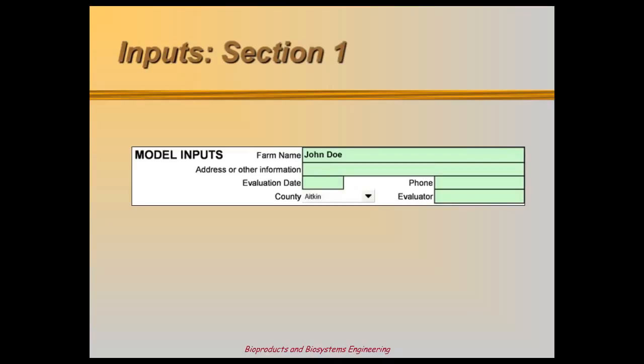First, the basics: farm name, location, and site contact information. The site evaluator and the date of the site visit comes next. A drop-down menu selects the feedlot's location by county. This is critical because climate varies across the state, and one county may get much more rain than another.